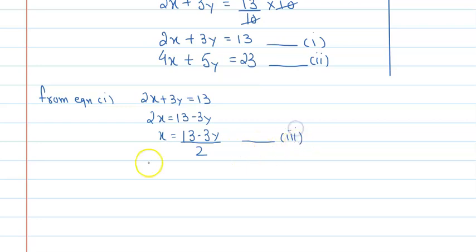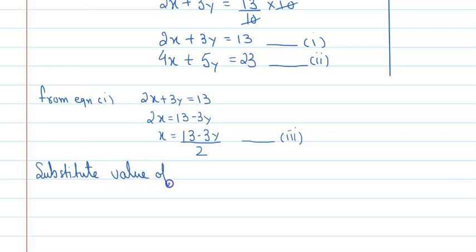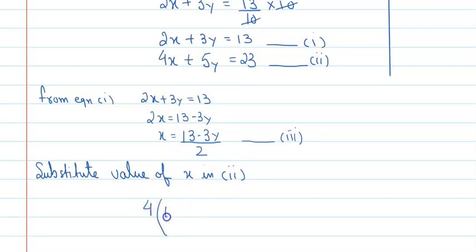इसका भी last में use होगा। तो आप substitute value of X in equation 2। जैसे आप value में put करेंगे: 4 · (13 minus 3y upon 2) plus 5y equal to 23.